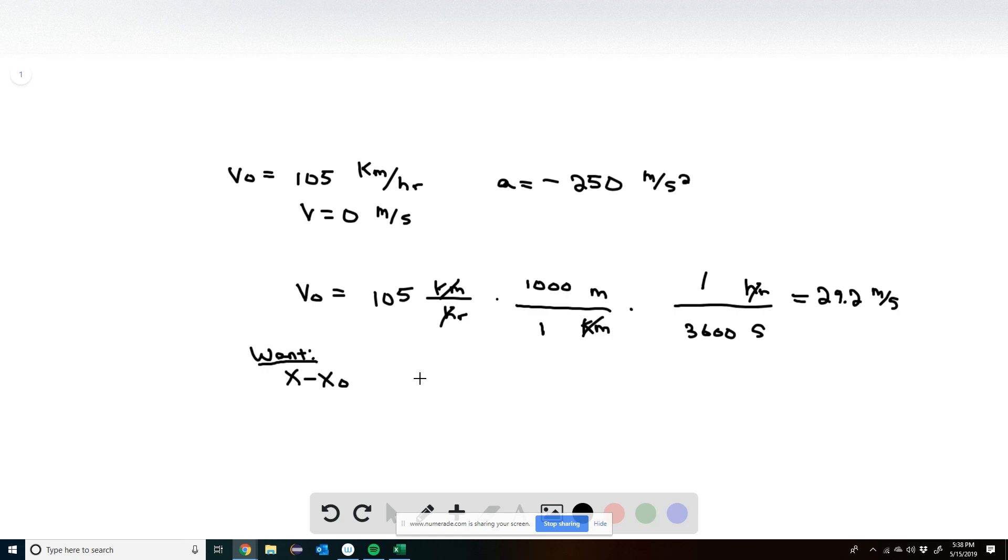And what we're going to do to calculate it is use the kinematic equation. V² is equal to V0² plus 2A times X minus X0. I use this one because we have no information about the time. And this is the one kinematic equation that doesn't involve time. And I'm going to calculate it on the next page.